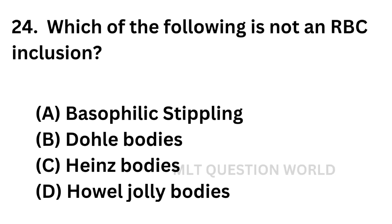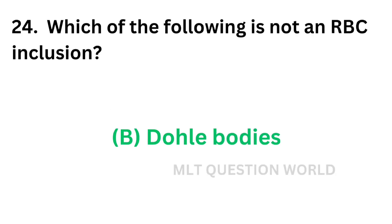Question number twenty-four: Which of the following is not an RBC inclusion? Option A: Basophilic stippling, Option B: Döhle bodies, Option C: Heinz bodies, Option D: Howell-Jolly bodies. The correct answer is Option B — Döhle bodies. Döhle bodies are WBC inclusions.